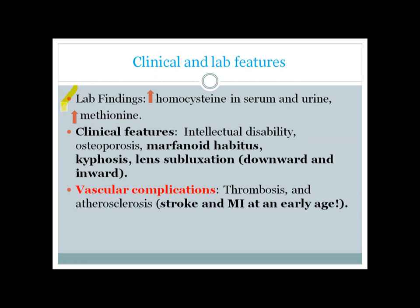The lab findings of homocystinuria are easy to remember. Due to decreased enzyme activity, homocysteine levels increase in serum, leading to increased homocysteine in the urine — the hallmark homocystinuria. Methionine levels commonly increase in cystathionine synthase deficiency or vitamin B6 deficiency, but in homocysteine methyltransferase deficiency, methionine levels actually drop.